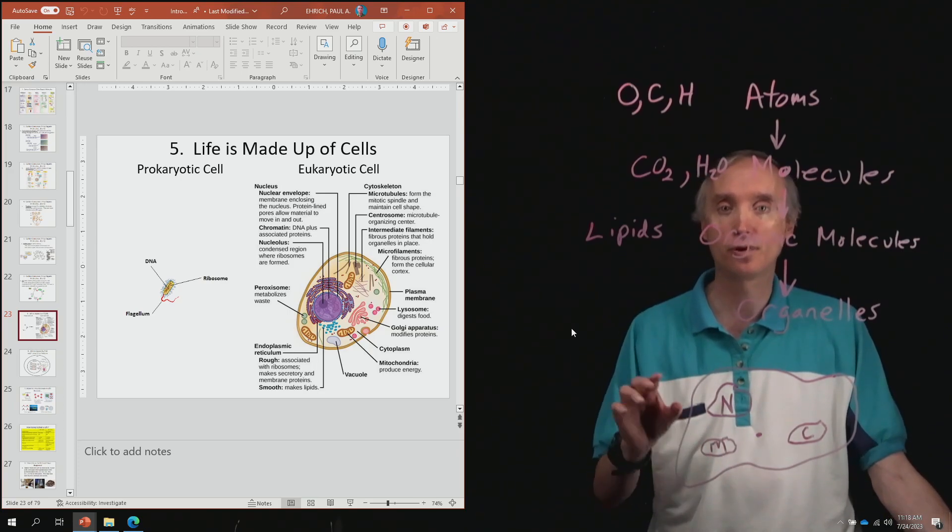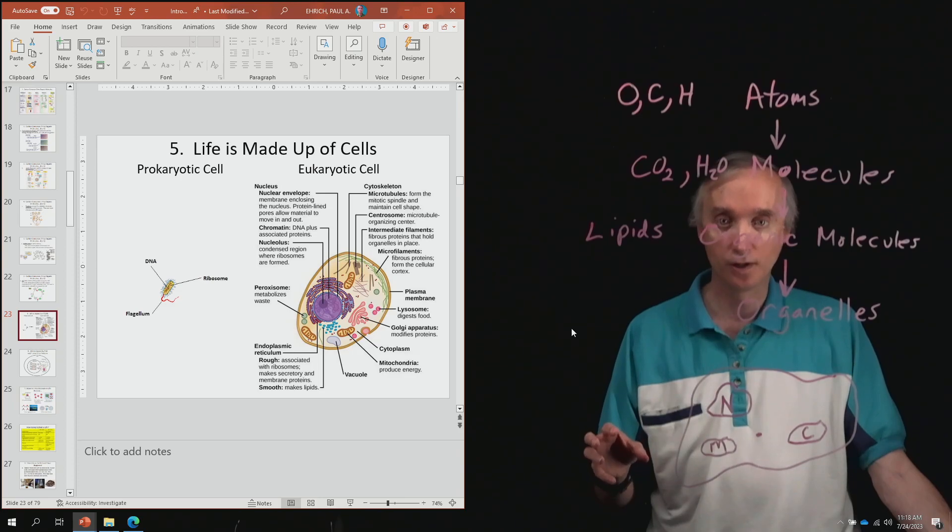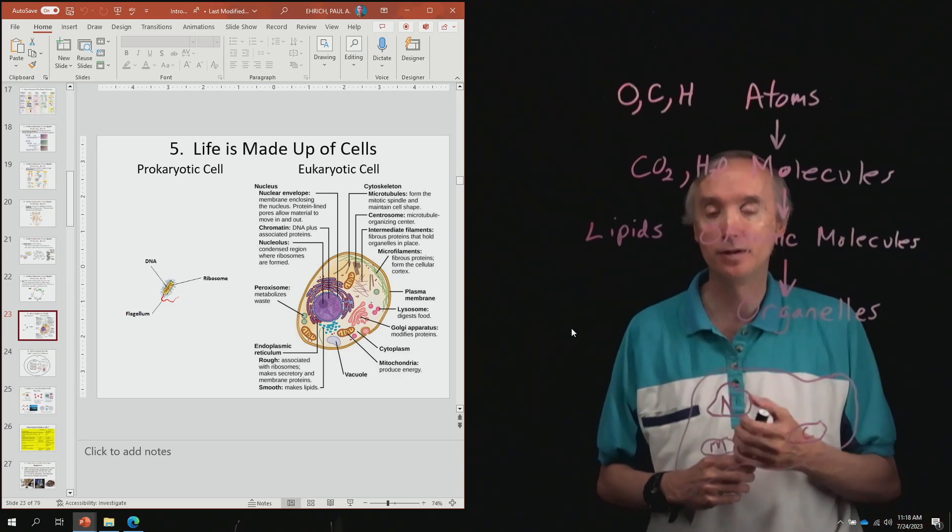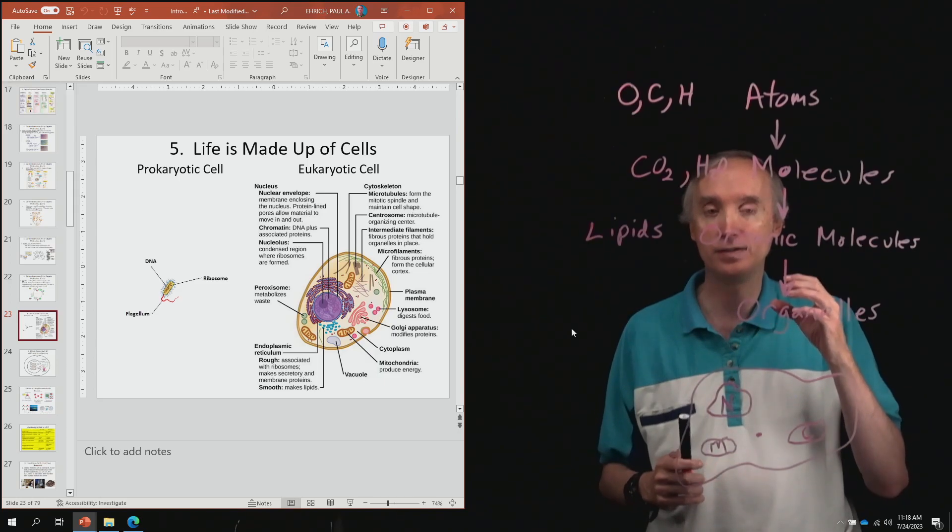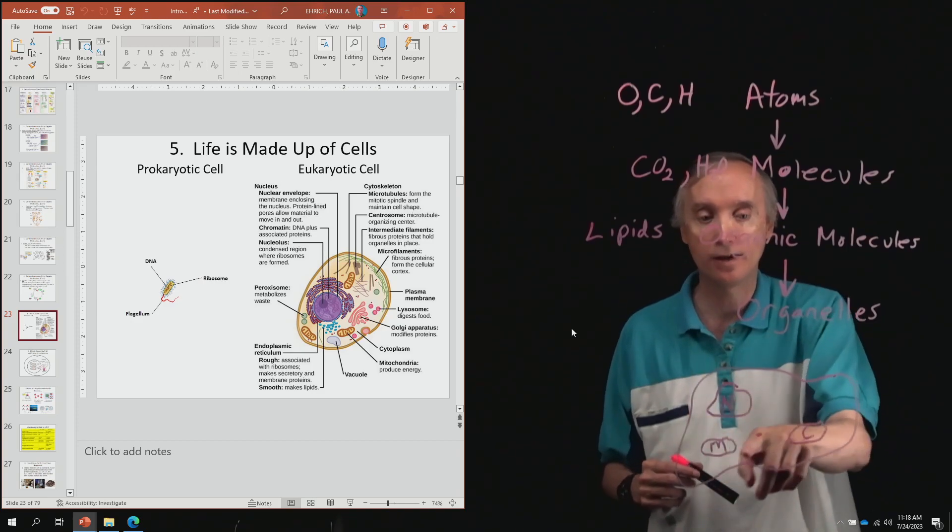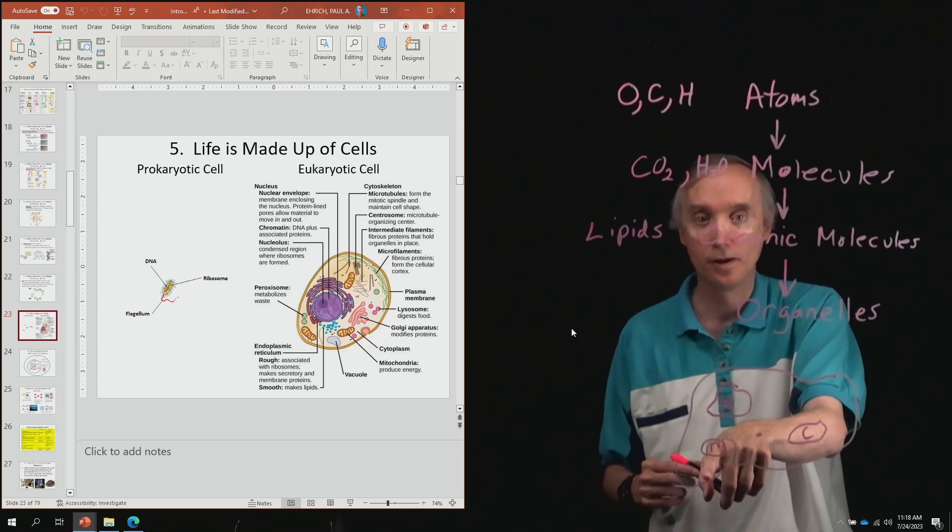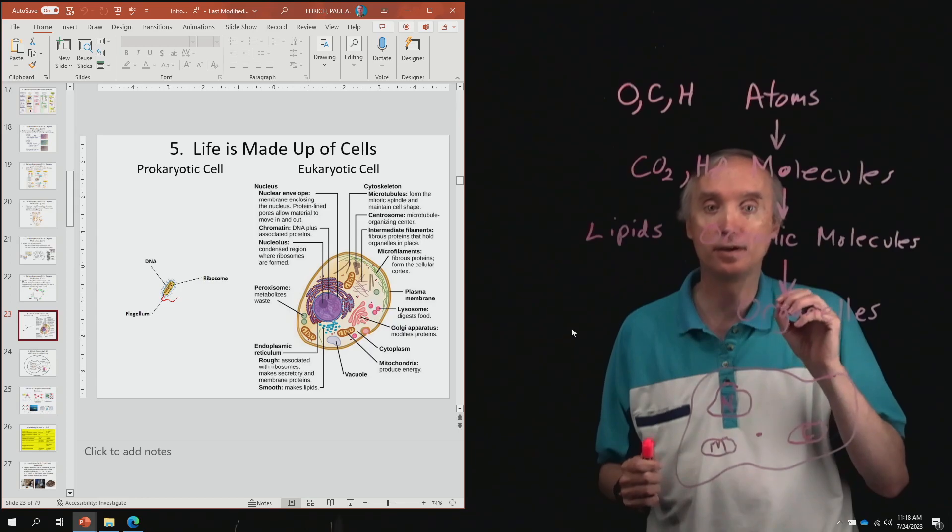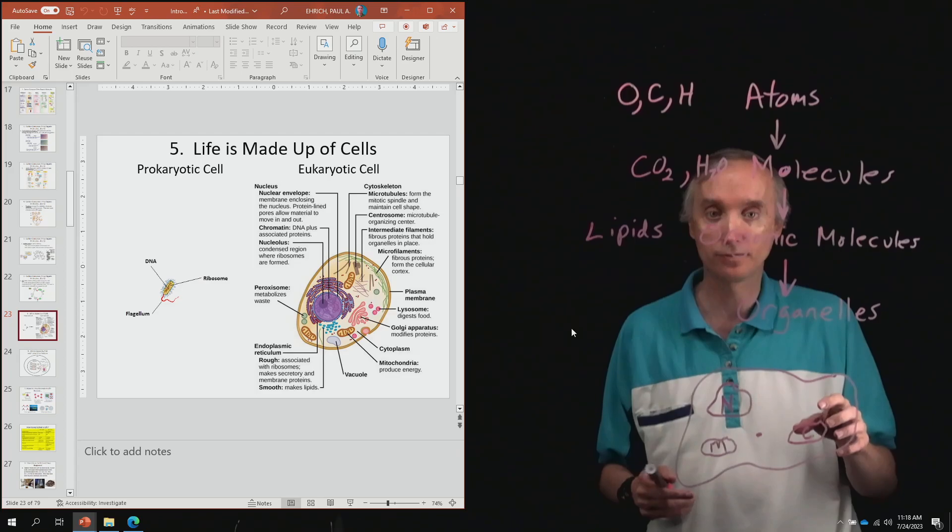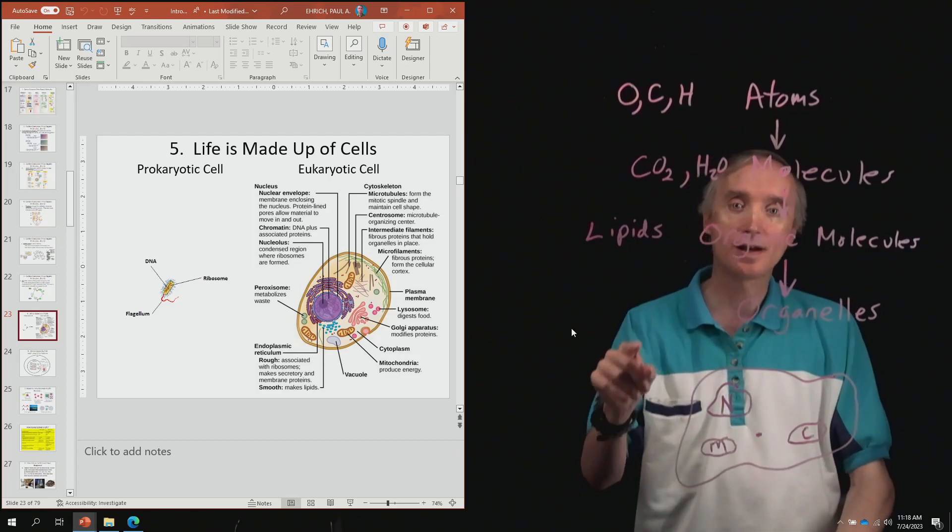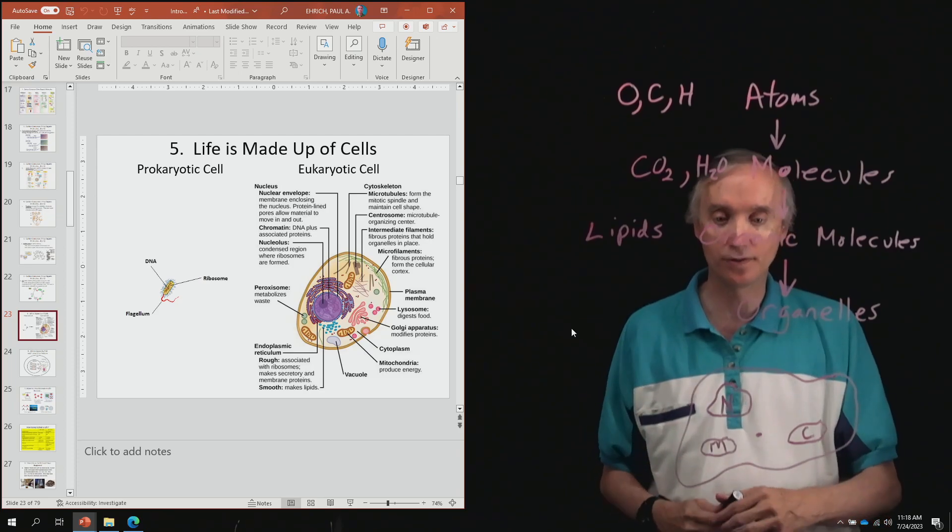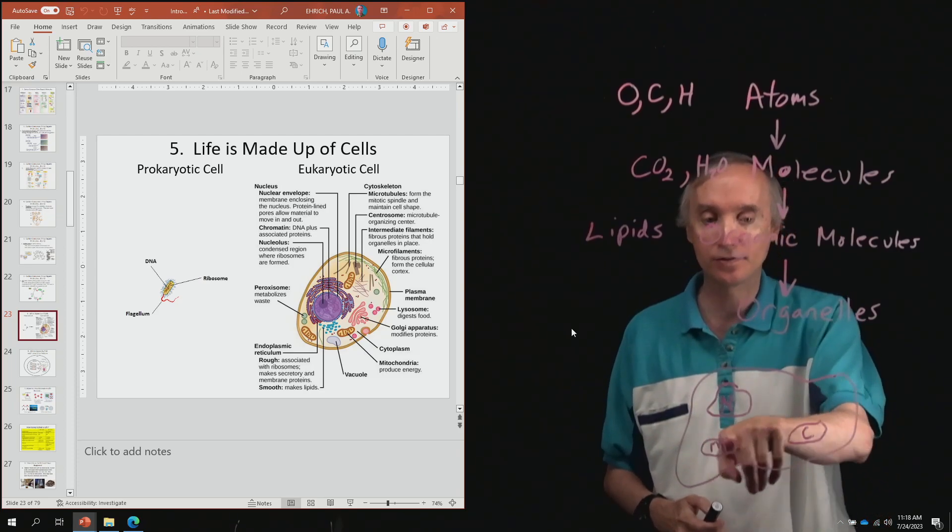Another thing I'd like for you to notice is look at the size of a prokaryotic cell, which is a bacteria. So a bacteria is the simplest kind of life. And it also is going to have a cell membrane, but inside of it, it has a very, very simple structure.